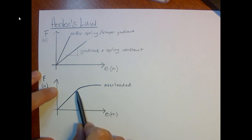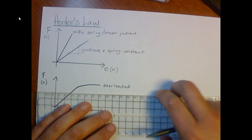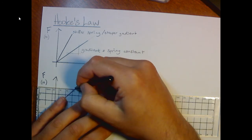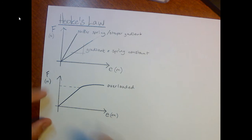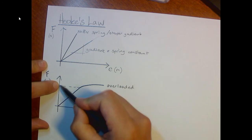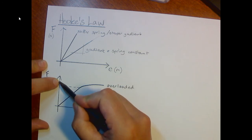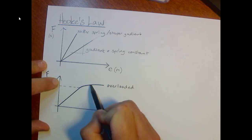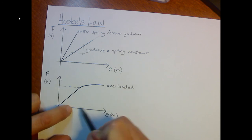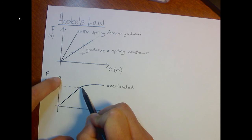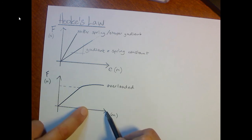But there is a point at which the graph stops being a straight line. And at this point here, we start to get really big extensions. So you can see that for the next little bit of force we increase, the extension, well, that's a big change in extension. We were getting little bits of extension before, now we get a big bit. The next little bit of force gives us an even bigger bit of extension.